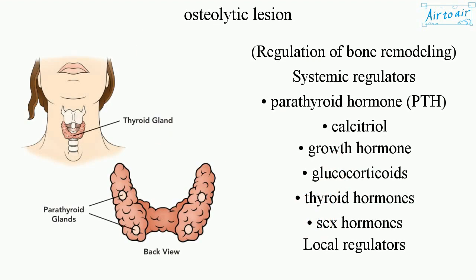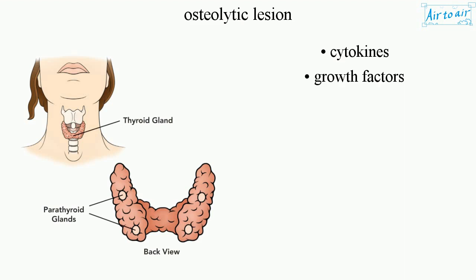Regulation of bone remodeling involves systemic regulators including parathyroid hormone (PTH), calcitriol, growth hormone, glucocorticoids, thyroid hormones, and sex hormones, as well as local regulators such as cytokines and growth factors.